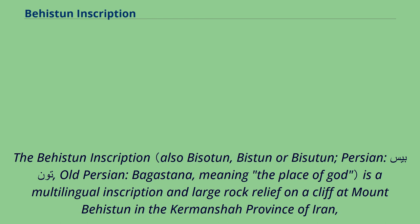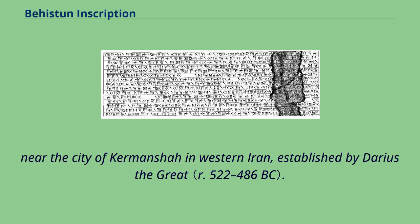The Behistun inscription is a multilingual inscription and large rock relief on a cliff at Mount Behistun in the Kermanshah province of Iran, near the city of Kermanshah in western Iran, established by Darius the Great.